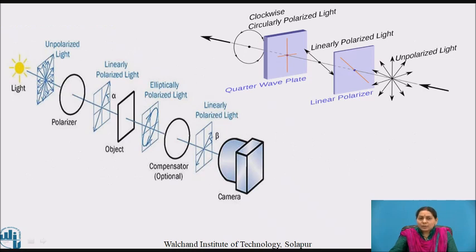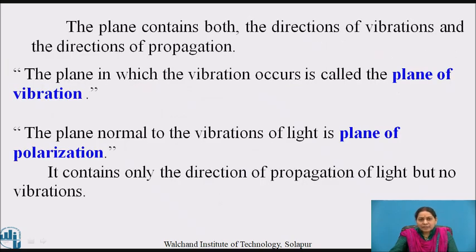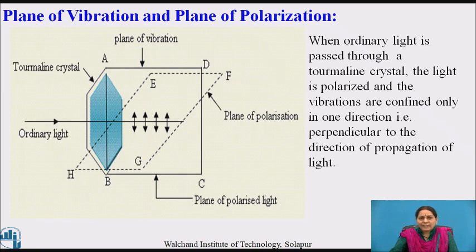The diagram shows unpolarized light, linearly, circularly, and elliptically polarized light. The plane in which vibration occurs is known as the plane of vibration, and it contains the direction of vibration and the direction of propagation. The plane normal to the vibrational light is the plane of polarization, and it contains only the direction of propagation of light but not the vibrations. When ordinary light is passed through a tourmaline crystal, the light is polarized and the vibrations are confined only in one direction perpendicular to the direction of propagation. This describes the plane of vibration and plane of polarization.